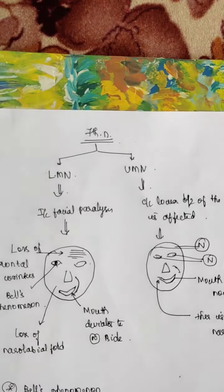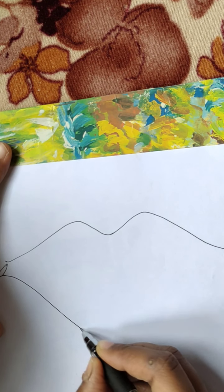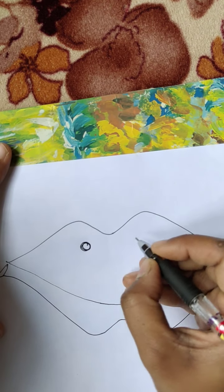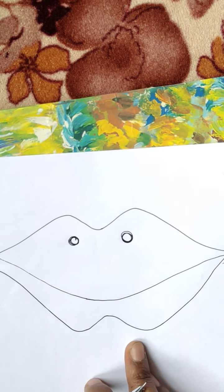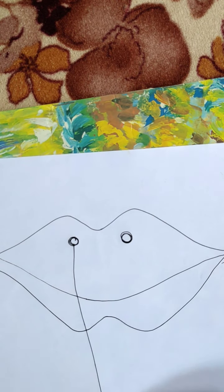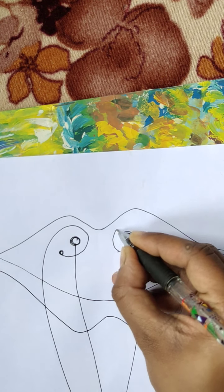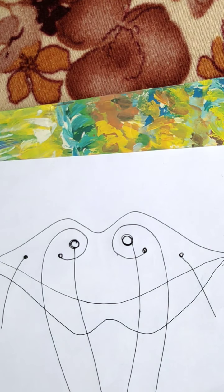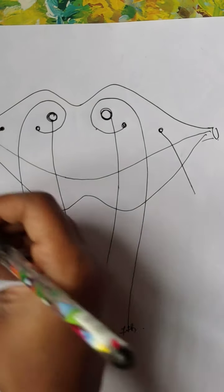Now that we have learned the lesions of the 7th nerve, and we know the 7th nerve arises from the pons, let us learn about the lesions of the pons. Imagine this is a cross-section of the pons at the facial colliculi level. The 6th nerve nuclei is present here, and the 7th nerve nuclei winds around and comes around it. At this level, the 8th nerve also comes. So the 6th nerve comes straight, the 7th nerve winds around, and the 8th nerve is further away. Here also come the corticospinal and corticonuclear fibers.